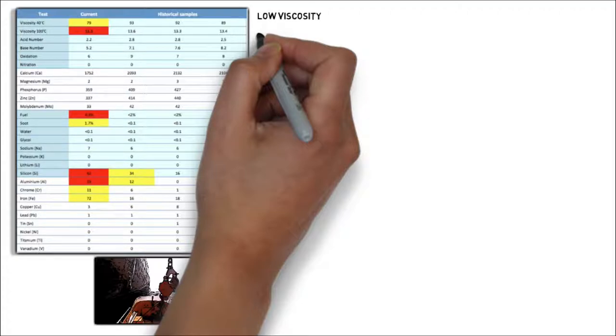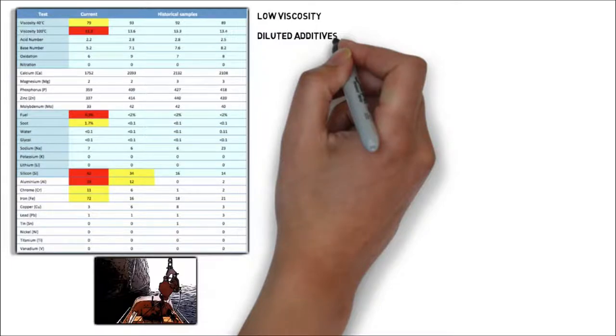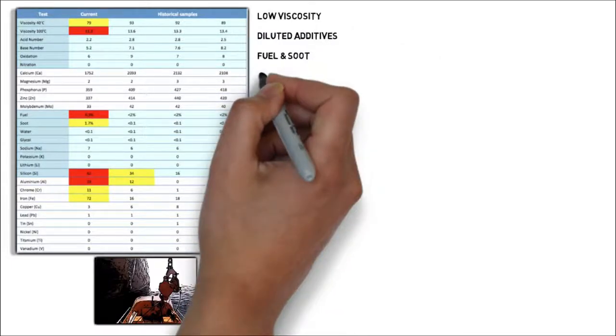So have both the acid number and base numbers. Suggesting something is diluting the additives and thinning the oil. This appears to be fuel. Which there is also soot from incomplete combustion of this fuel.